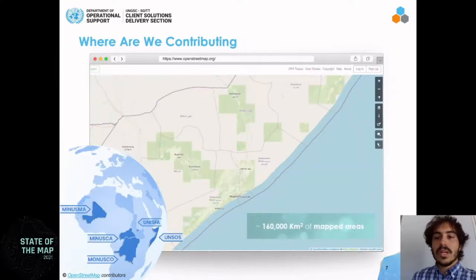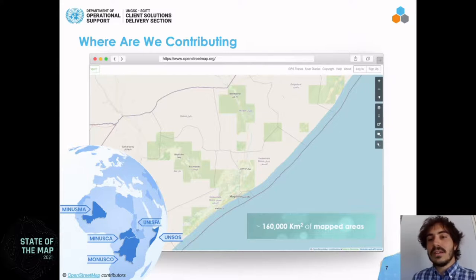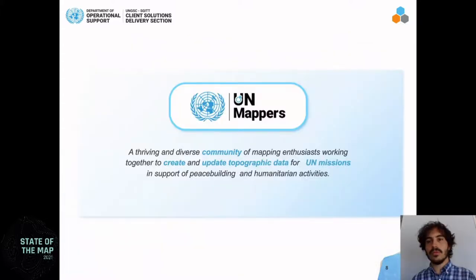In two years, they mapped over 160,000 km² of topographic areas in five regions: Somalia, Mali, Central African Republic, Democratic Republic of the Congo, and the ABA region. This is done not only with paid editing but also leveraging crowdsourcing — giving volunteers worldwide the ability to contribute for UN Peacekeeping missions through the UN Mappers community.